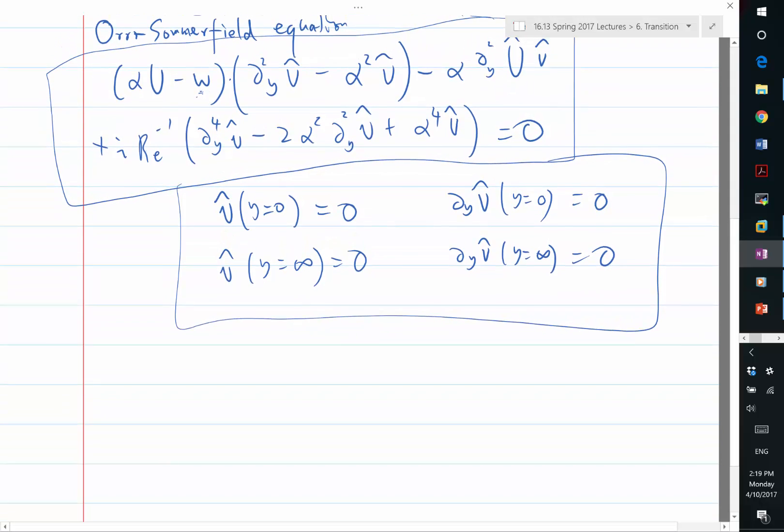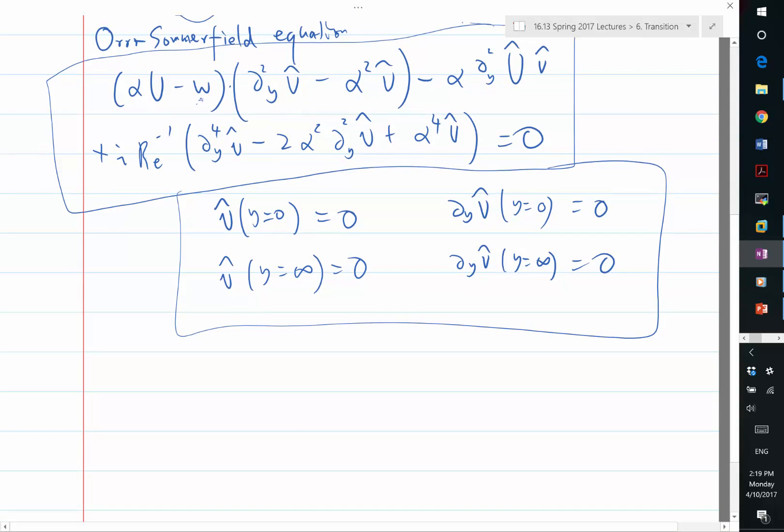Or you can fix omega and look for the eigensolutions corresponding to alpha. Either way, there are terms multiplied with omega and terms multiplied by alpha, alpha squared, and alpha fourth. You can fix omega and look for what values of alpha give you non-trivial solutions, or fix alpha and look for what values of omega give you non-trivial solutions.